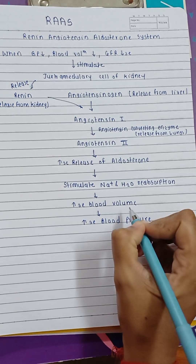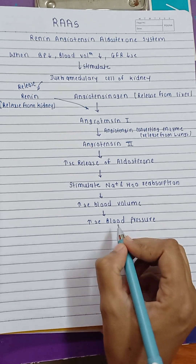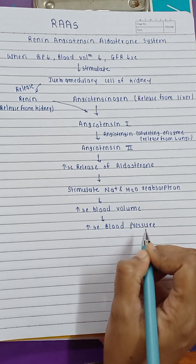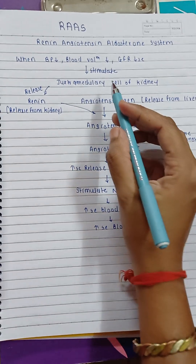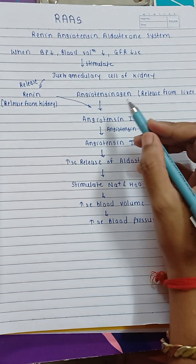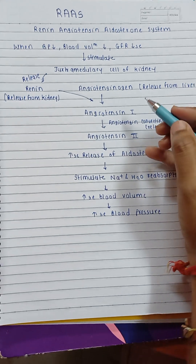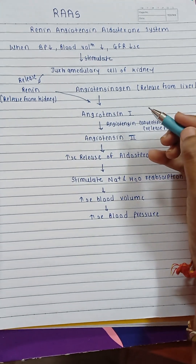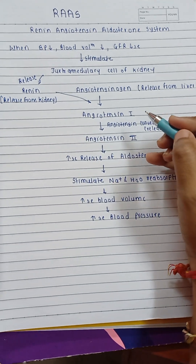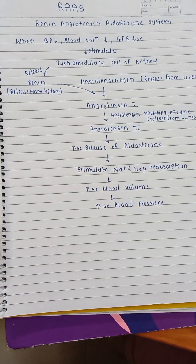This leads to increased blood volume and increased blood pressure. So the RAS mechanism helps to increase blood pressure.